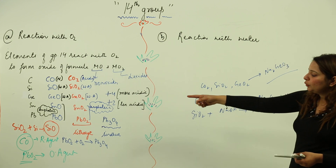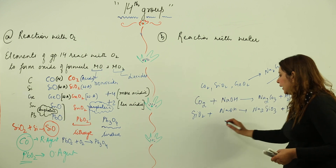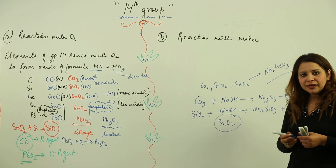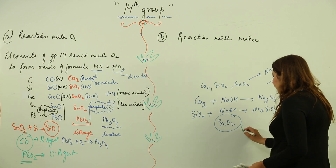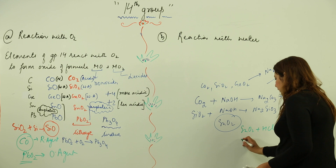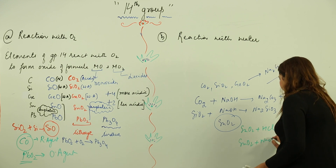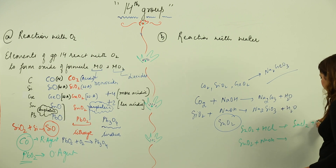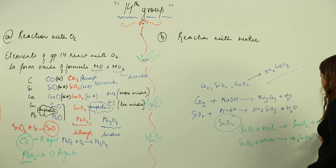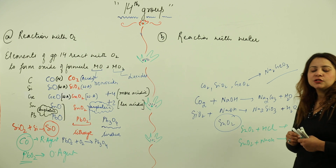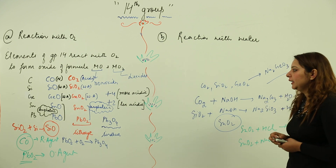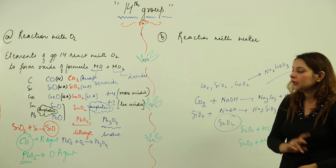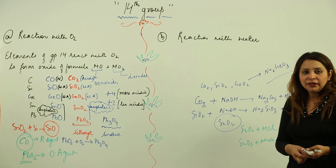To show the amphoteric nature of tin dioxide: since it has both acidic and basic character, it must be reacted with both an acid and a base. Reacting SnO2 with acid gives SnCl2 and water, and reacting with base gives Na2SnO3 and water. This demonstrates that its nature is amphoteric.